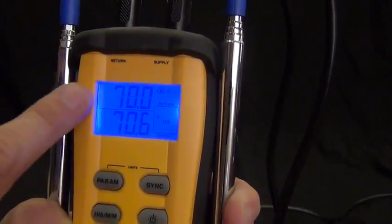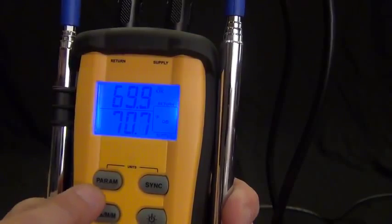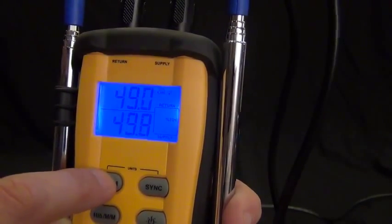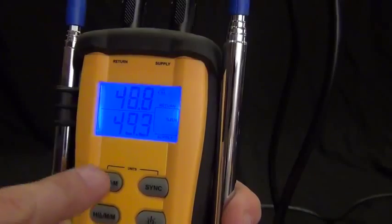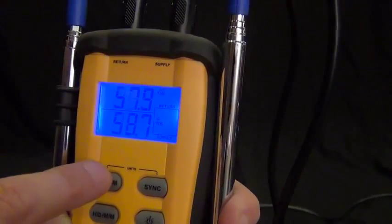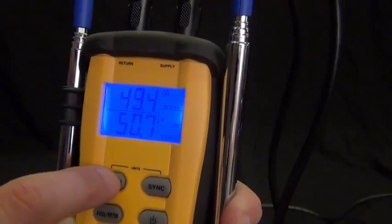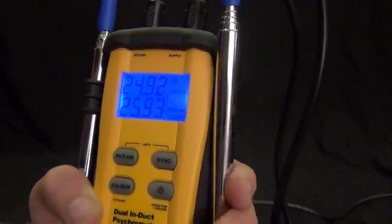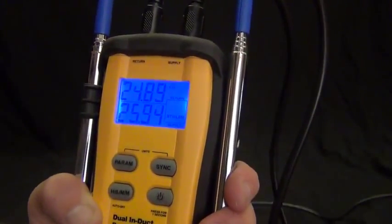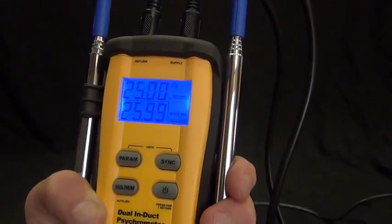And then to check out the different parameters I just press the parameter button. So I got dry bulb, relative humidity. Basically, those two measurements are used to calculate wet bulb and dew point as well as BTU per pound, which is basically your enthalpy on either side of the evaporator coil.